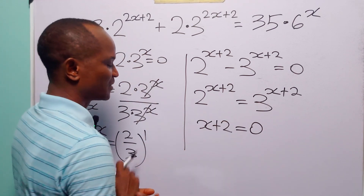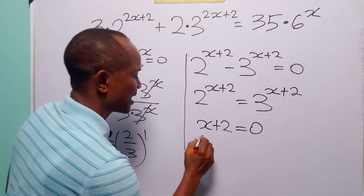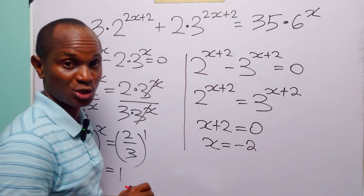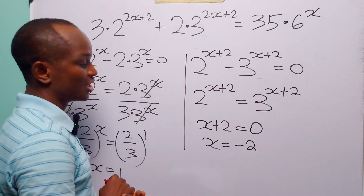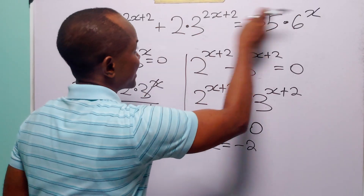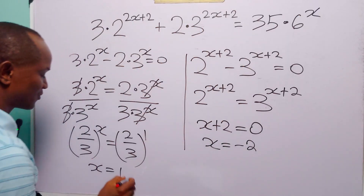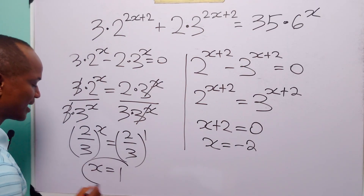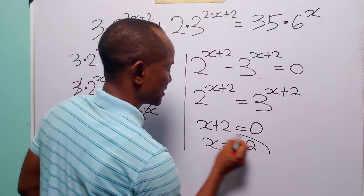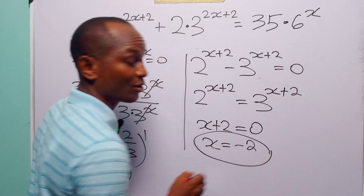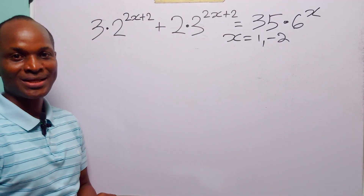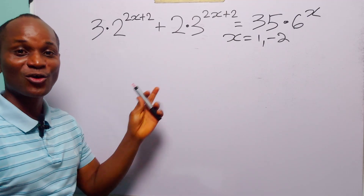From x+2 equals 0 we get x equals minus 2. So the two values of x that satisfy this exponential equation are x equals 1 and x equals minus 2. Now there is an alternative way of solving this exponential equation.